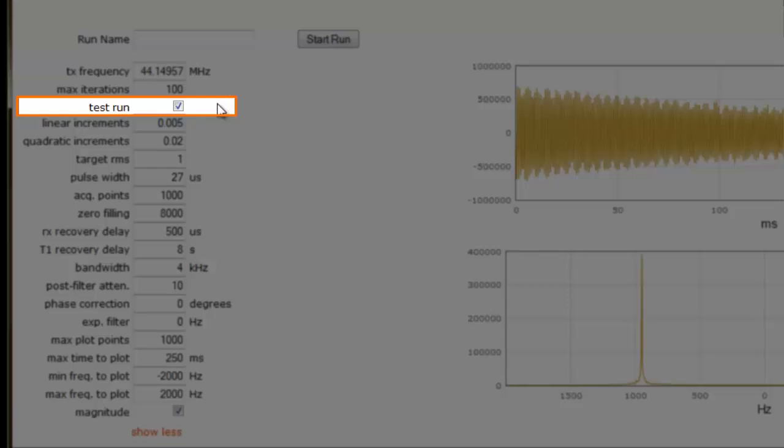This is particularly handy for evaluating the current state of the magnet shim, as well as for discovering and positioning our signal. The next two parameter fields, linear increments and quadratic increments, are the step sizes the algorithm will use to adjust the shim coil current values.